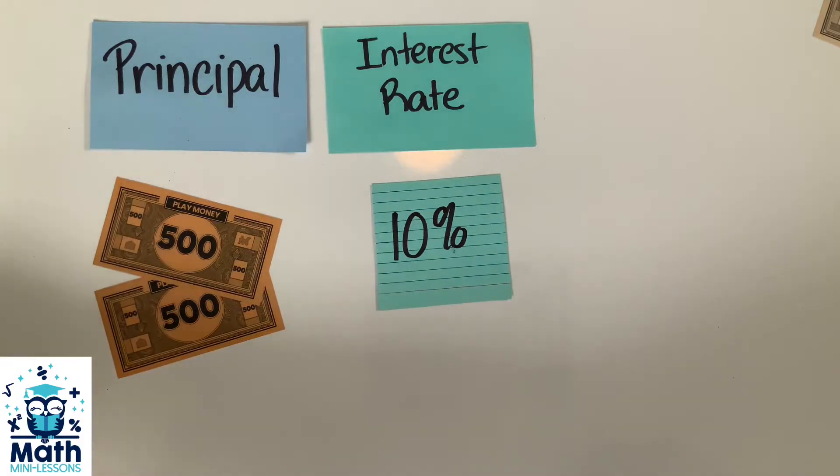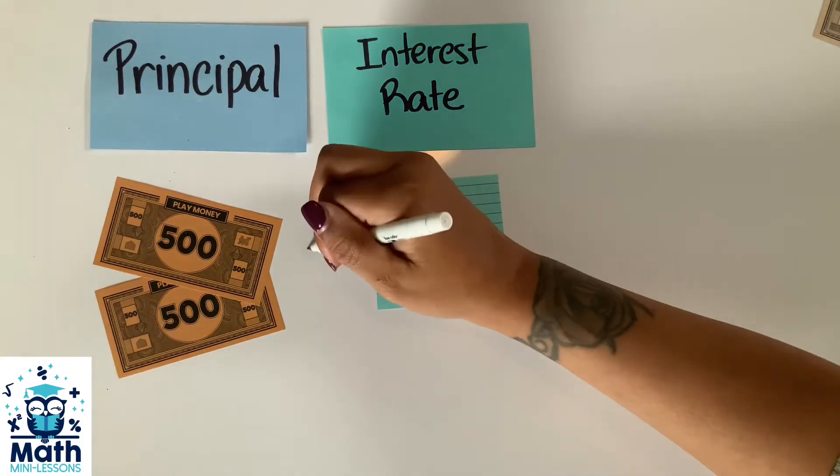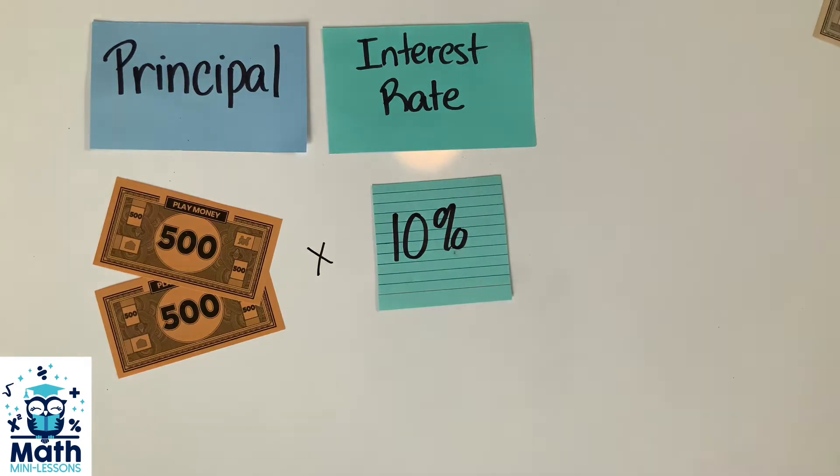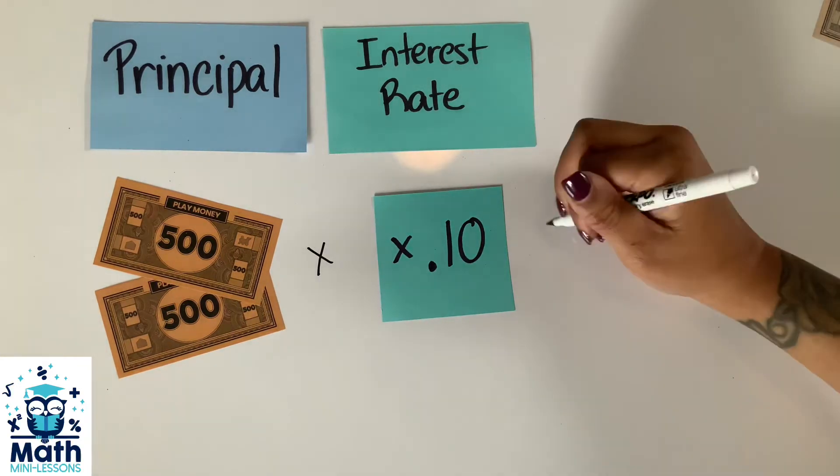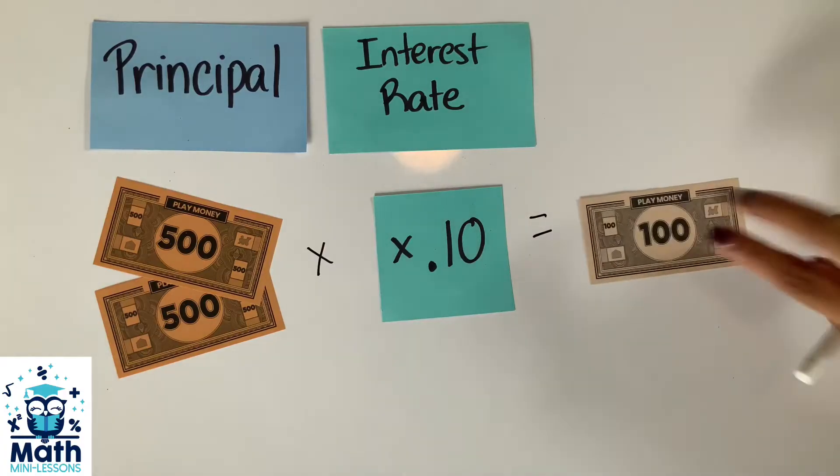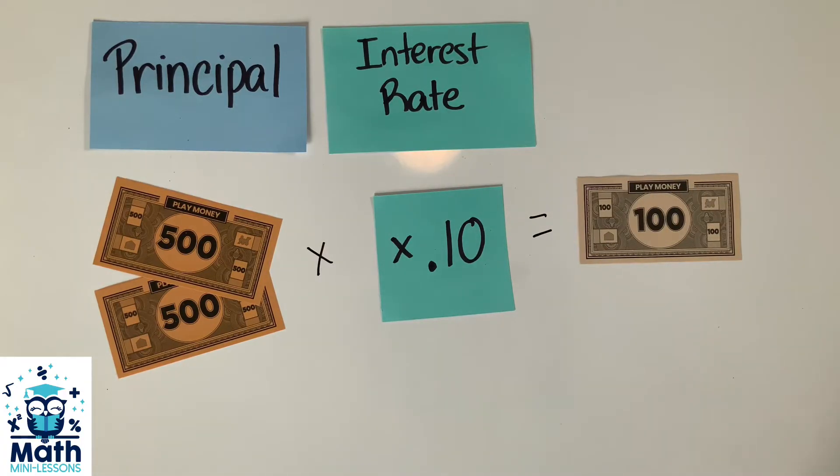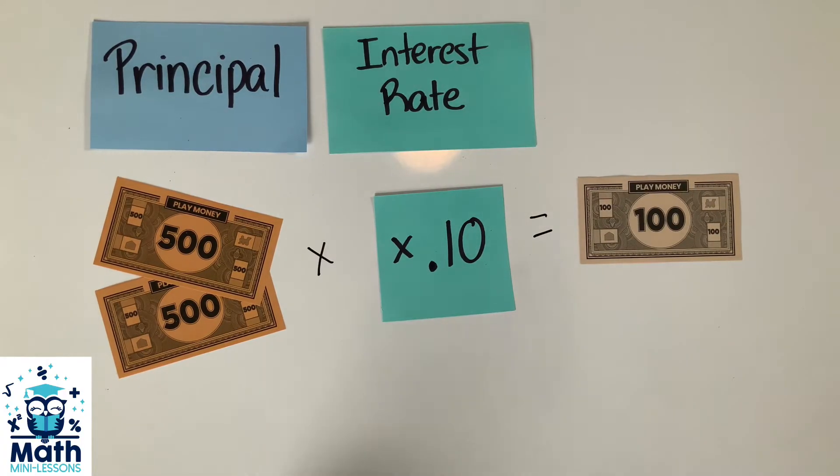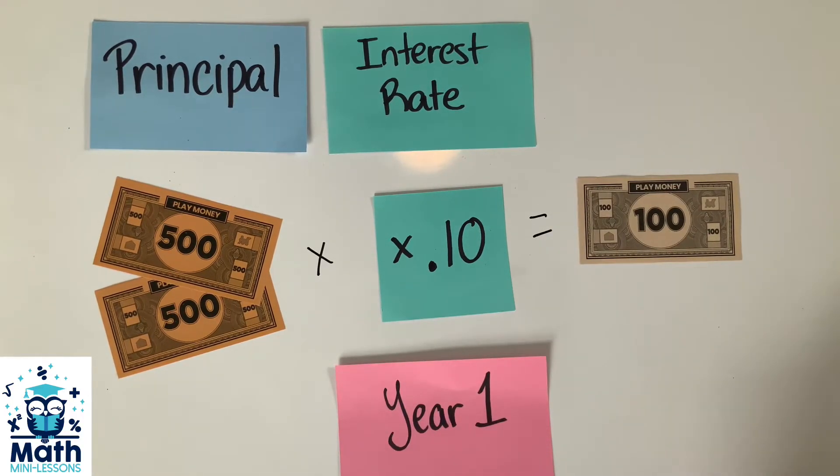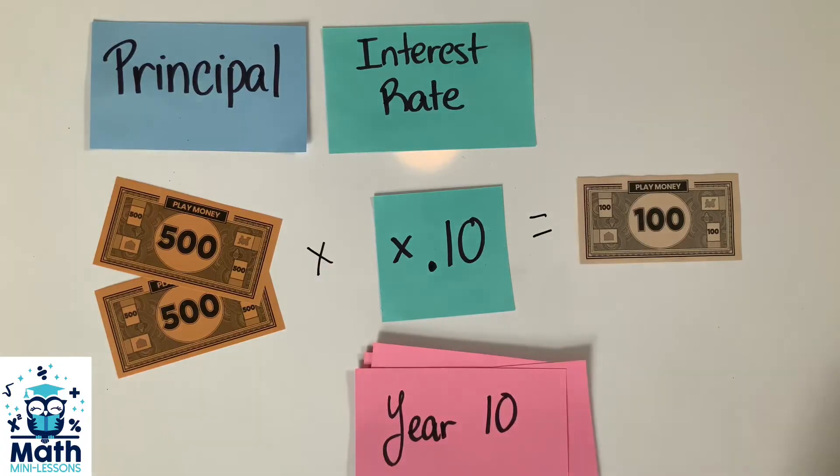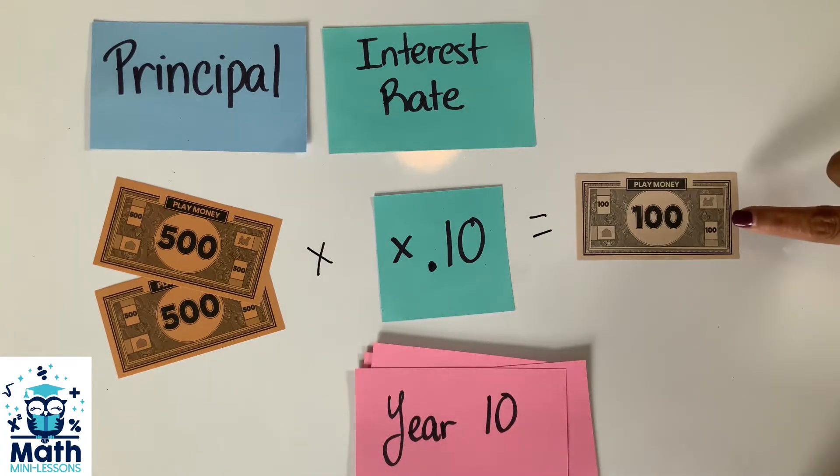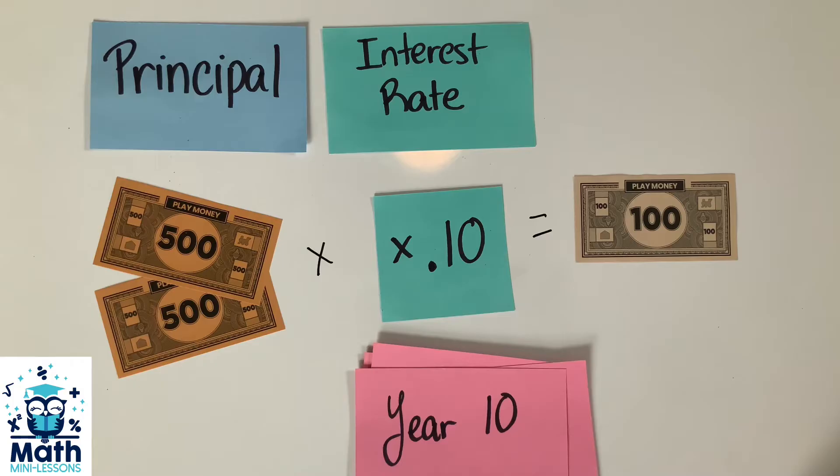To figure out how much you'll pay per year, we're going to multiply what you borrowed by 10%, or let's change that to a decimal 0.10, and that is going to be equal to $100 every single year. It doesn't matter if it's just one year, two years, four years, even if it's 10 years - you're always going to pay $100 every single year with simple interest.